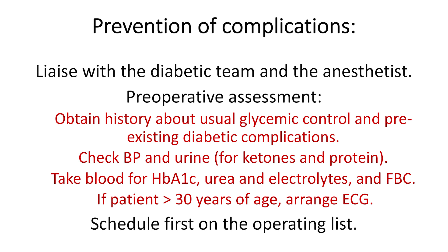You should obtain history about usual glycemic control and any pre-existing diabetic complications. Check blood pressure and urine for ketones and protein. Do blood tests for HbA1c, urea and electrolytes, and a full blood count. If the patient is over 30 years of age, also arrange an ECG.